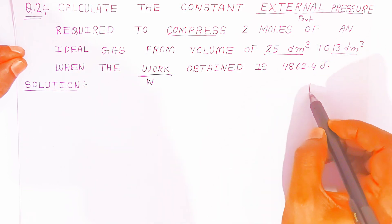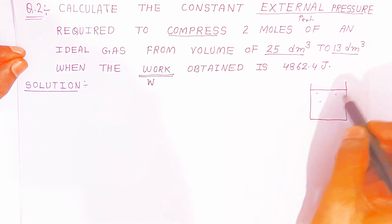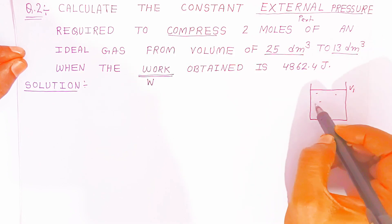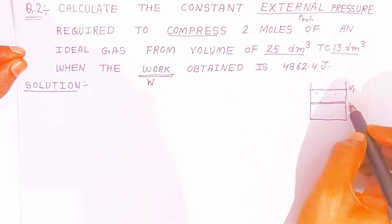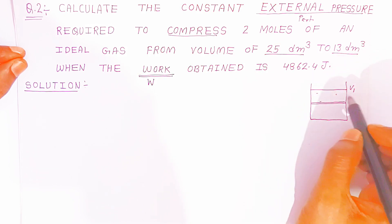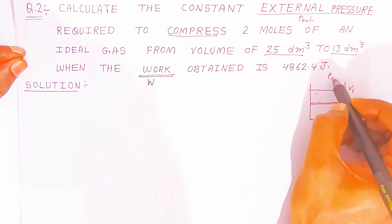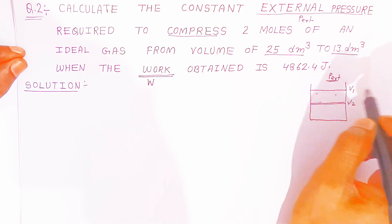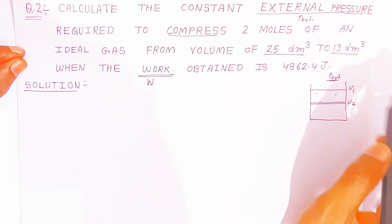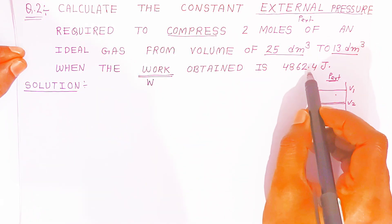So, the gas is inside the cylinder. The initial volume V1 is 25 dm³, and after compression the final volume V2 becomes 13 dm³. The work done W is given as 4862.4 J. You have to find the external pressure — what will be the pressure of the surrounding?